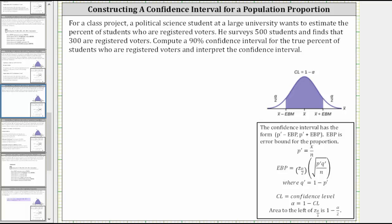This example will show how to construct a confidence interval for a population proportion. For a class project, a political science student at a large university wants to estimate the percent of students who are registered voters. He surveys 500 students and finds that 300 are registered voters. Compute a 90% confidence interval for the true percent of students who are registered voters and interpret the confidence interval.